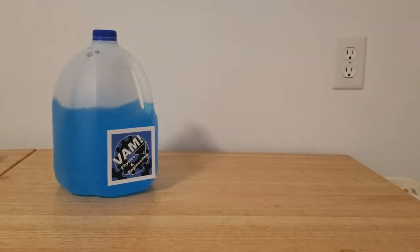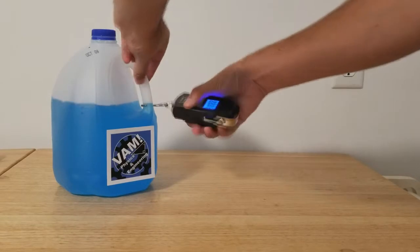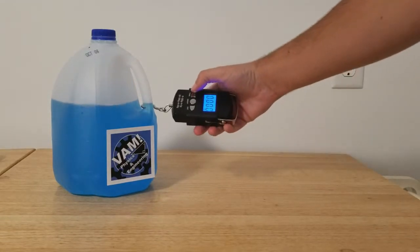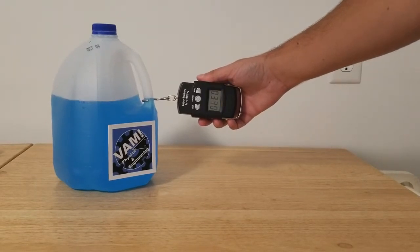Now we place the jug on a laminated wooden surface and pull the jug using a force gauge. We record the force just before the jug moves. We want to find the coefficient of static friction for the jug on the laminated wooden surface.